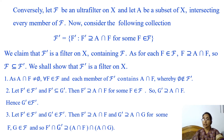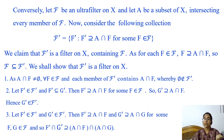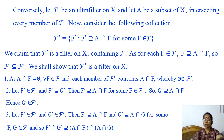Conversely, let F be an ultrafilter on X. We have to show that F contains all those subsets of X which intersect every member of F. Let A be a subset of X intersecting every member of filter F. Then we have to show that A belongs to F.